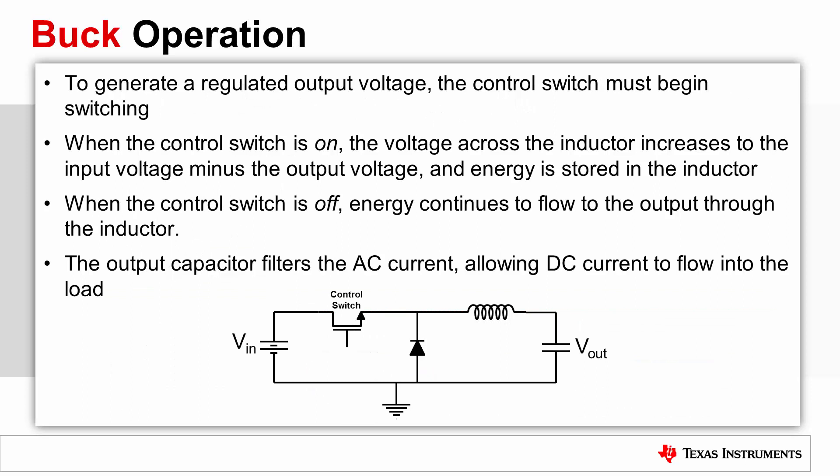Outlined here is a high-level overview of the buck converter's operation. Operation begins when the control switch starts switching, and the steady-state operation is defined by two states: the control switch being on, or the control switch being off. When the control switch is on, the voltage across the inductor is the input voltage minus the output voltage, and the current increases through the inductor by V = L·di/dt. When the control switch is off, energy continues to flow to the output from the inductor; however, the current in the inductor is decreasing during this period by the same V = L·di/dt equation. The output capacitor is used to filter the triangular AC current, which allows DC current to flow into the load.